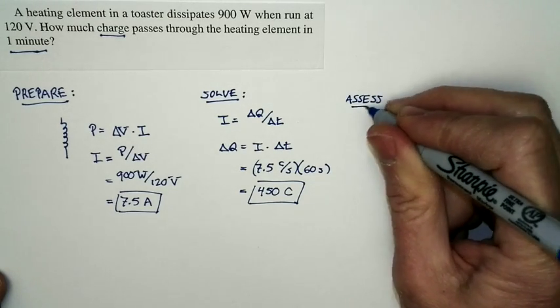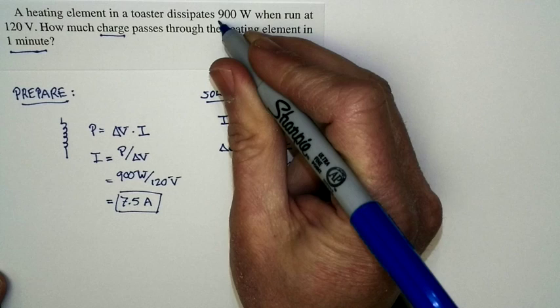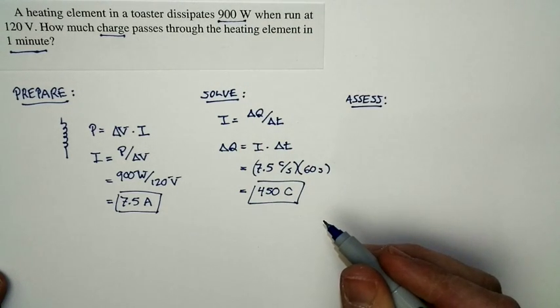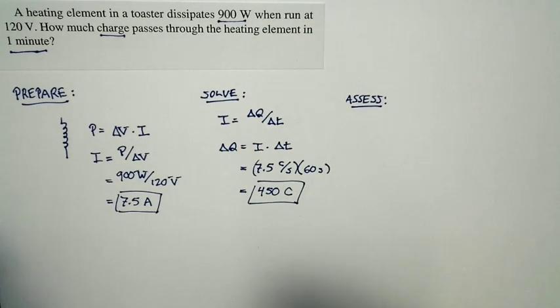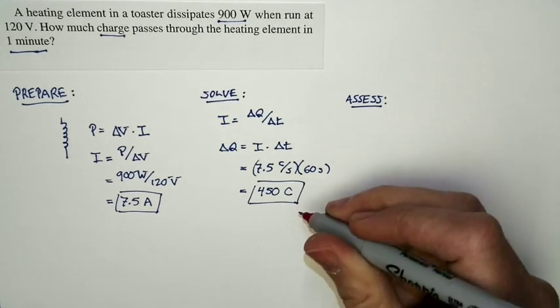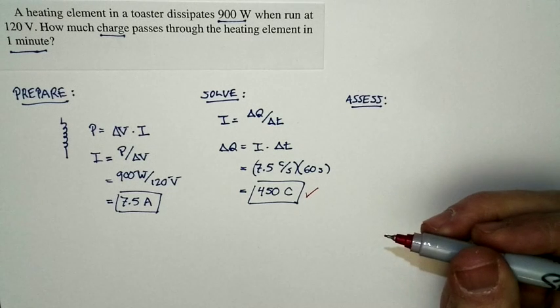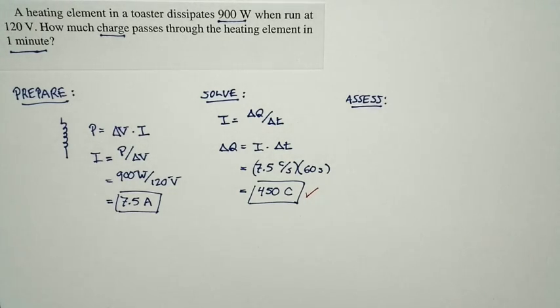Our assessment is this. A toaster is a pretty high power device. It's 900 watts. And so we expect a significant motion of charges. And in fact, that's what we find. We find a very large amount of charge in motion, and so this matches our expectations of how the world works.